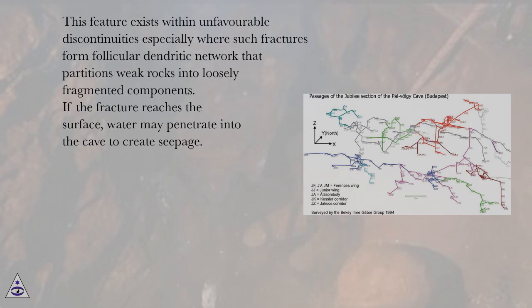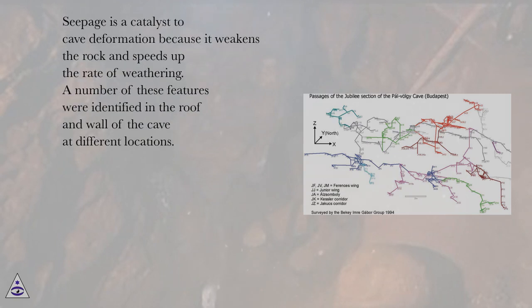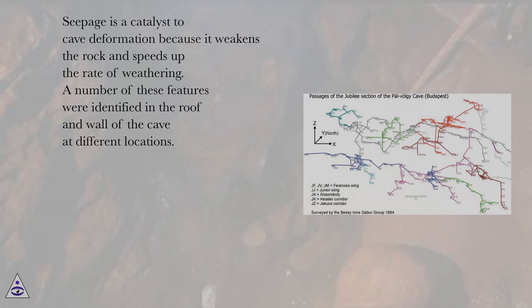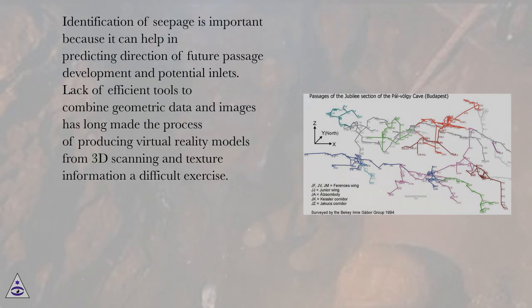If the fracture reaches the surface, water may penetrate into the cave to create seepage. Seepage is a catalyst to cave deformation because it weakens the rock and speeds up the rate of weathering. A number of these features were identified in the roof and wall of the cave at different locations. Identification of seepage is important because it can help in predicting the direction of future passage development and potential inlets.